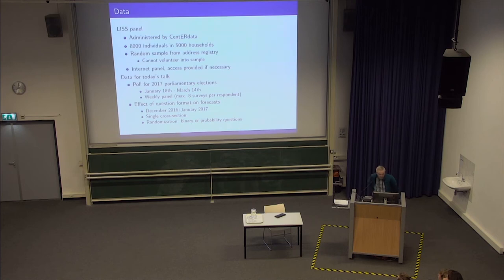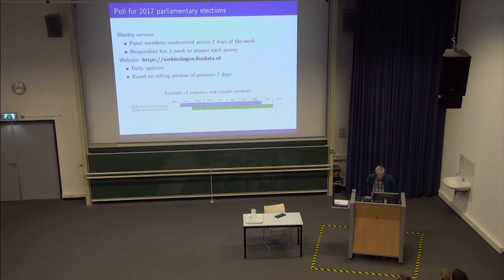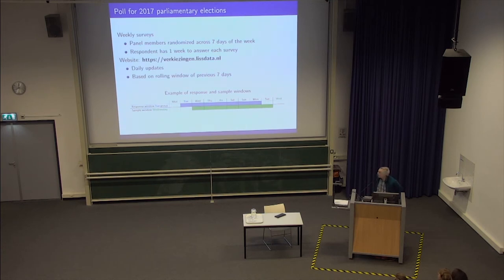We started in January 2017 and stopped the day before the elections. Before the main study we also had a pilot in December and January using a single cross-section to test things like order effects. In the main survey, every respondent is interviewed once a week — there's a weekly invitation to answer the voting behavior questions. The part of the panel we use is divided into seven parts.